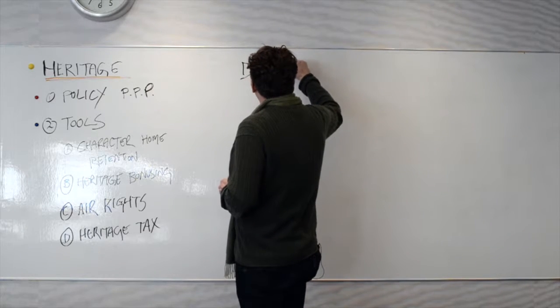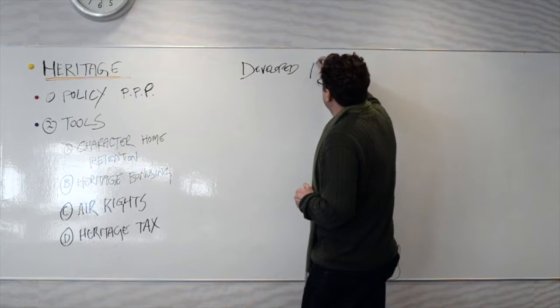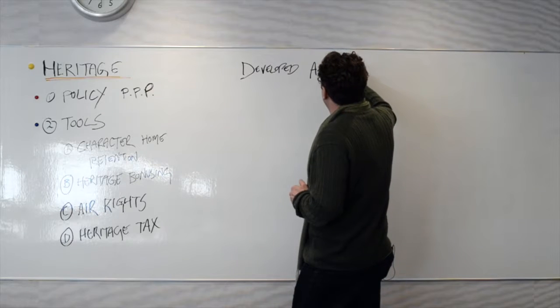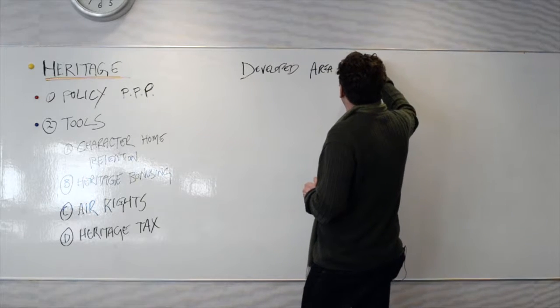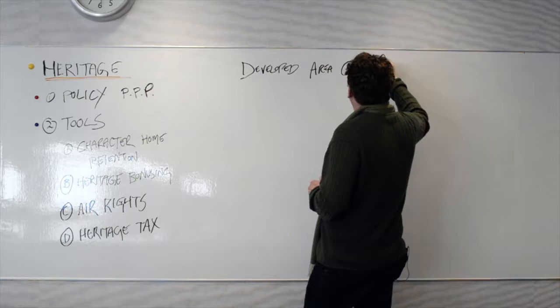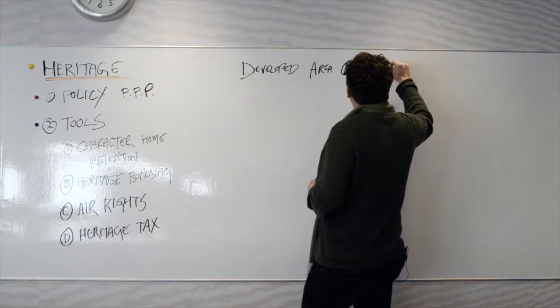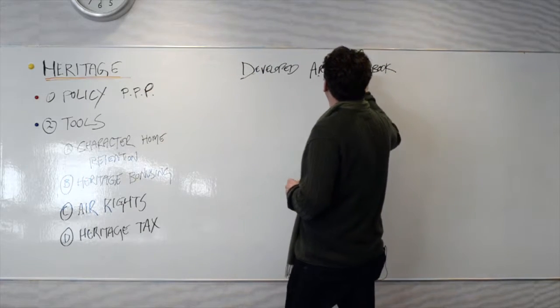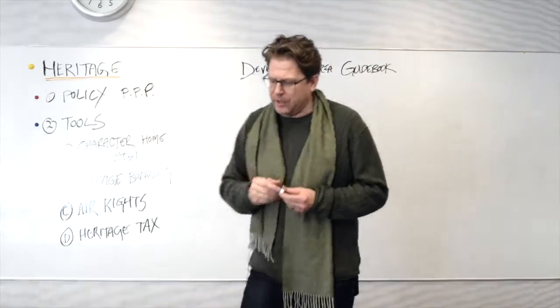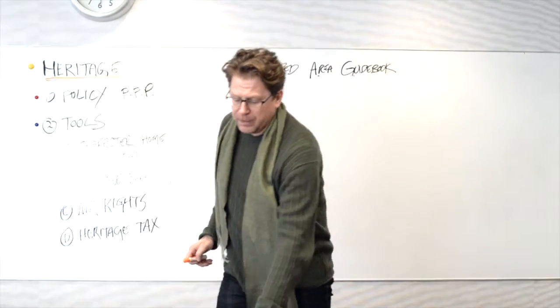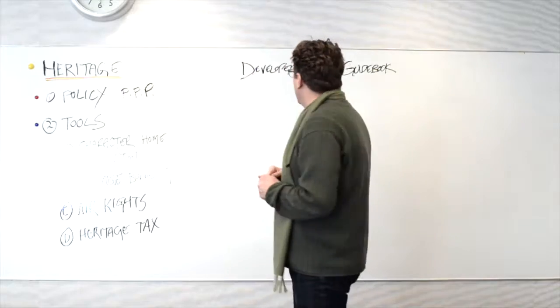And the Developed Area Guidebook is really point two of the Great Neighborhood's mission, and it's called Developed Area Guidebook. And we sometimes call it the DAG, which I understand in Australian is a bad word, but as we're not Australians, we're going to go with it.